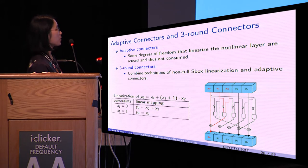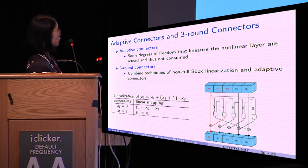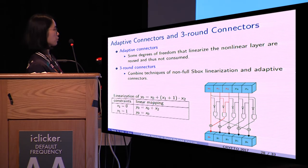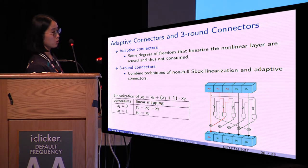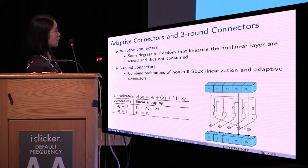Here, X_1 can be fixed to either 1 or 0. If we fix it to 0 this time, we can fix it to 1 next time. So the one-bit degree of freedom can be reused and thus not consumed.